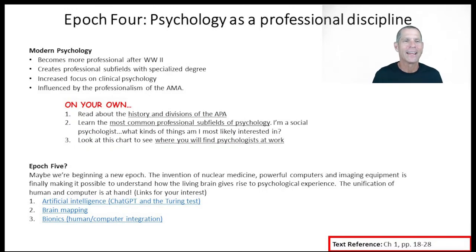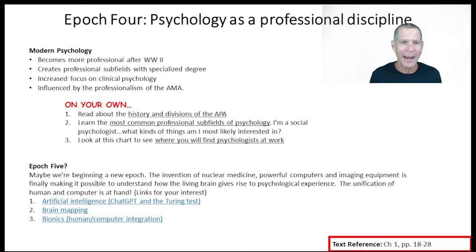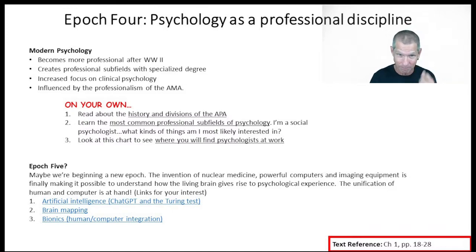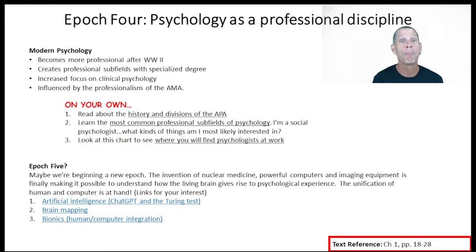You can read about the history of how the APA became more professional in your reading. One of the more important things psychology did was create professional subfields. What does it mean to say somebody is a cardiologist? It means they're a doctor who knows everything about the heart. Does a cardiologist know about treating feet? No — if you wanted your feet treated, you'd go to a podiatrist. If you were pregnant, you'd go to an OB-GYN. If you needed brain surgery, you'd go to a neurologist.